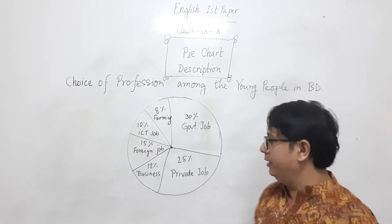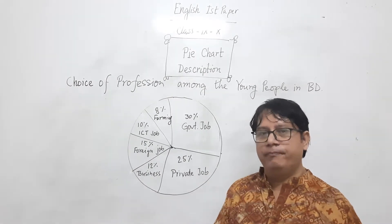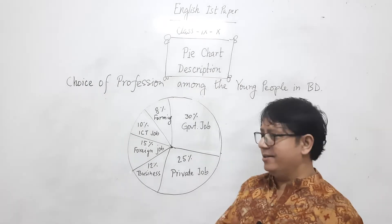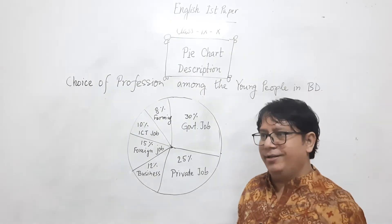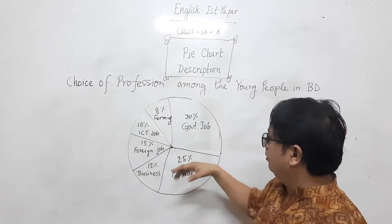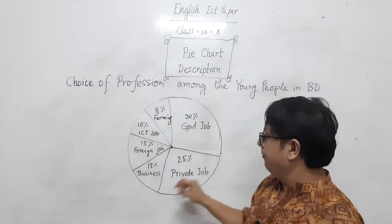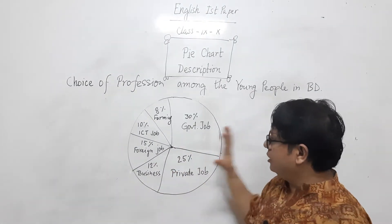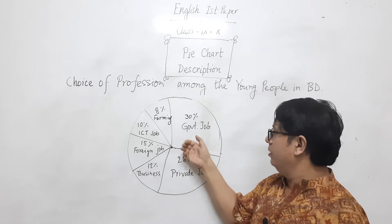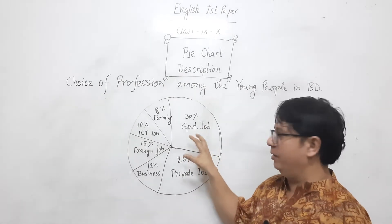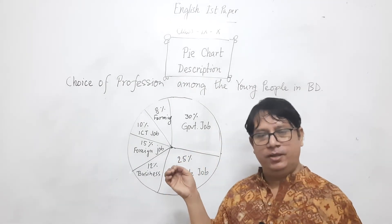In the detailed description, you can start from the larger sections to the smaller ones, or smaller to larger — there is no hard and fast rule. Starting with the biggest: 'In this pie chart, the largest area is occupied by government job — 30 percent of young people choose government job as their profession.' This is the most preferred choice.